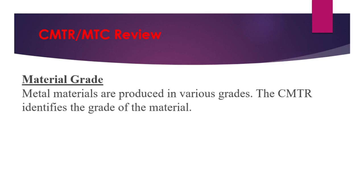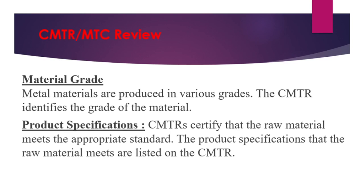The material grade must also be mentioned in the mill certificate. Materials are produced in various grades, and the CMTR identifies the grade of the material. Additionally, the product specification must be mentioned in the CMTR — what type of product and what specification is used. The CMTR certifies that the raw material meets the appropriate standard, and that standard must be listed on the CMTR.